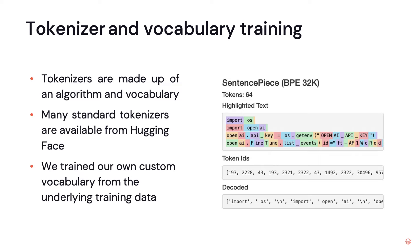The tokenizer is actually made up of two things: one is the algorithm, and the second is the vocabulary. A lot of these standard tokenizers are available from Hugging Face — one of the great things about the Transformers repo is you can download a tokenizer for many popular open source models with just one or two lines of code. What we did was train our own custom vocabulary from the underlying training data.